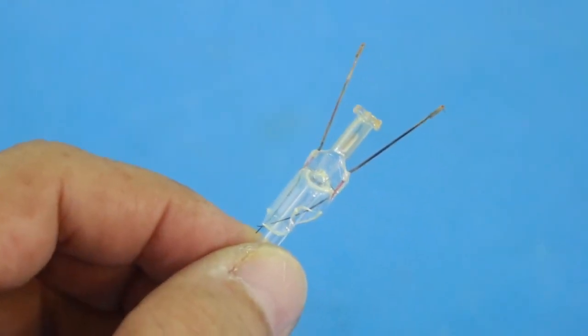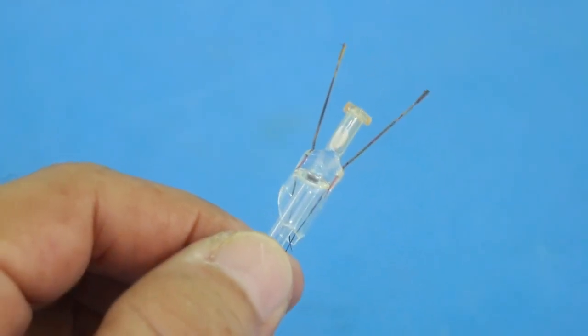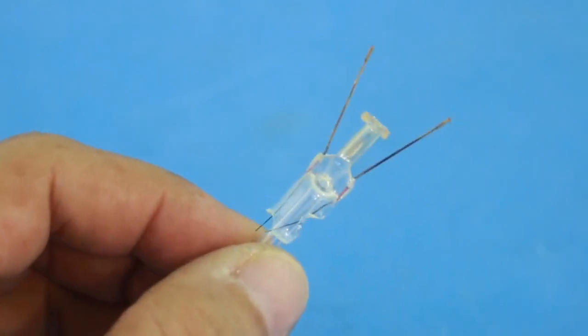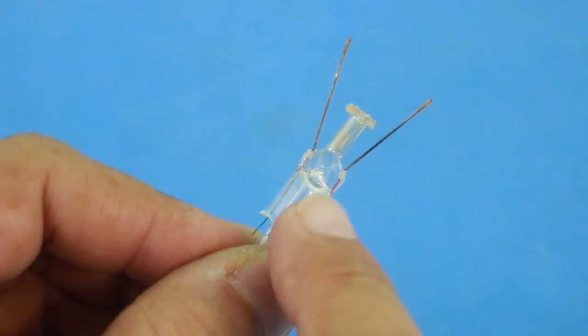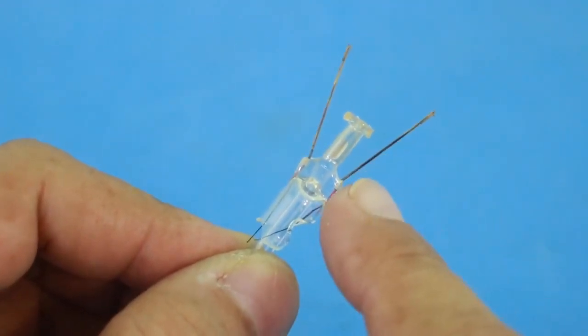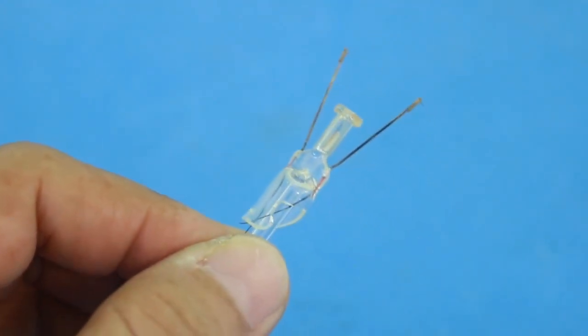Okay, here is the part of the incandescent bulb that I wanted. As you can see, the body is made of glass and it has these two wires inserted.